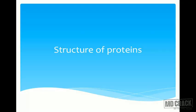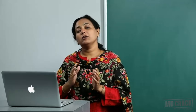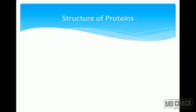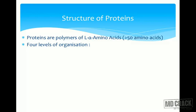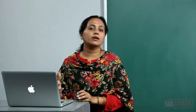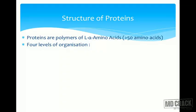Welcome back. In this session we'll be talking about the structure of proteins. From the beginning we have been hearing that proteins are nothing but polymers — more specifically, polymers of L-alpha amino acids. The number of standard amino acids is around 20, and these are the ones organized in different ways to form the vast number of proteins present in the body, having different functions, structures, and compositions.